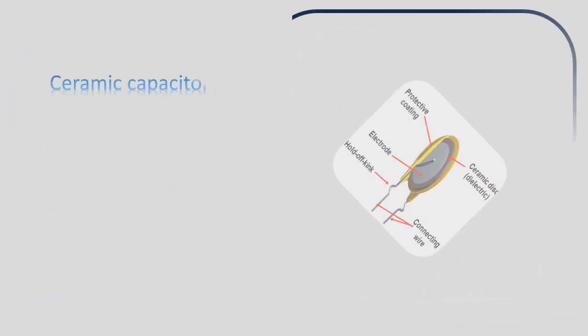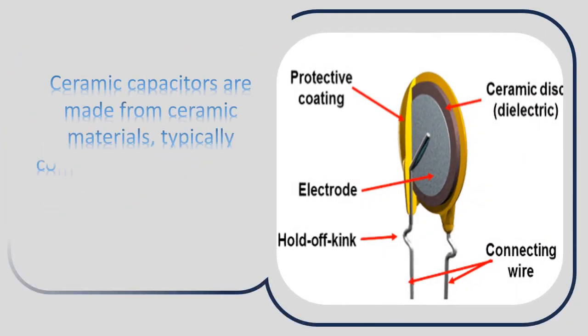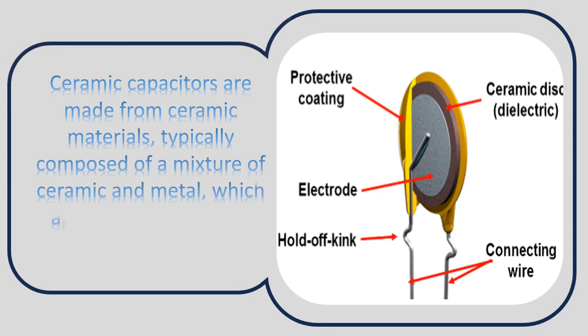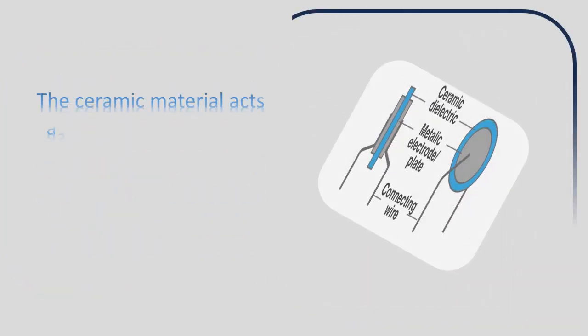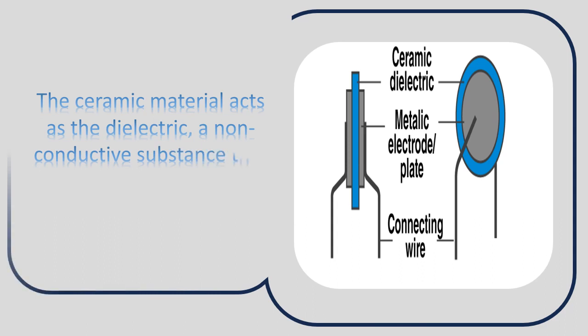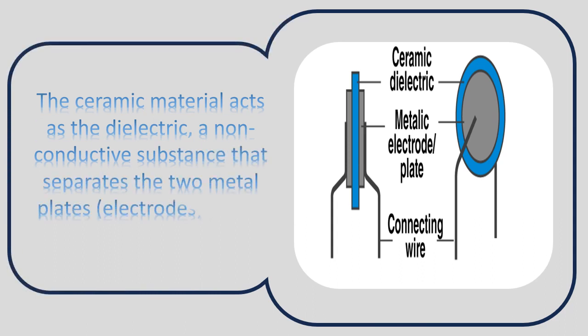Ceramic capacitors are made from ceramic materials, typically composed of a mixture of ceramic and metal, which are layered to create a sandwich-like structure. The ceramic material acts as the dielectric, a non-conductive substance that separates the two metal plates, or electrodes, within the capacitor.